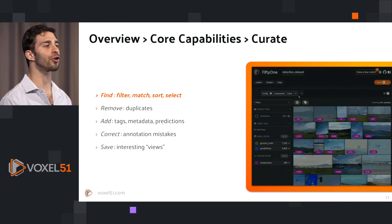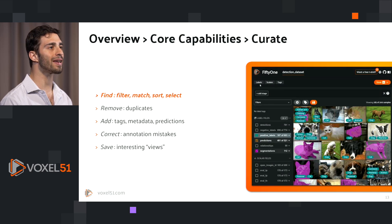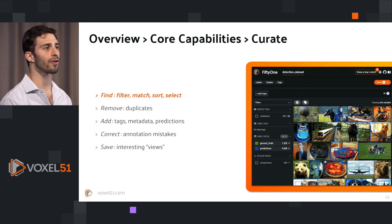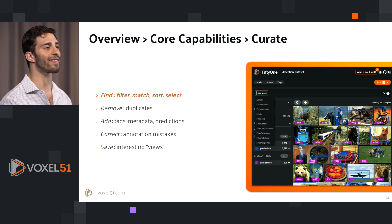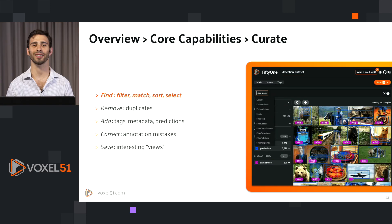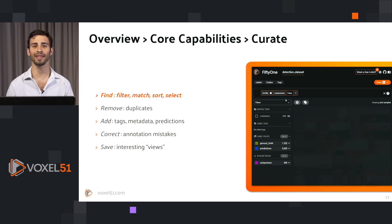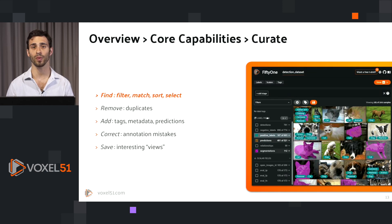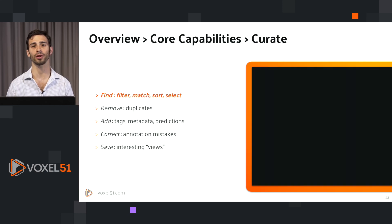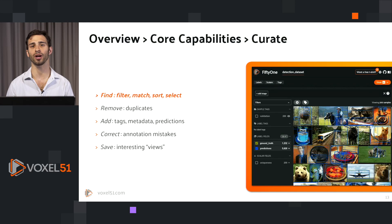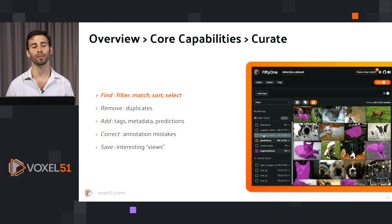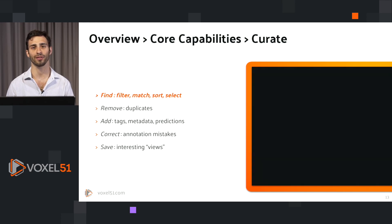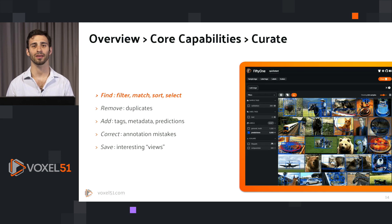At the heart of FiftyOne is curation. FiftyOne allows you to curate your dataset by finding subsets of interest, filtering down to those, sorting by specific properties, matching on specific criteria, and selecting data that fits your needs. In this example, we can see that using the UI in the FiftyOne app, we can sort by a property called uniqueness, which is a measure of the uniqueness of each image with respect to the entire dataset. Once we've done that, we can filter all of our predictions by prediction confidence using a slider.